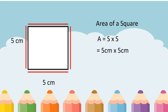The first side is 5 centimeters and the second side is also 5 centimeters. Five centimeters multiplied by 5 centimeters is equal to 25 square centimeters. So this is the total area of the square.